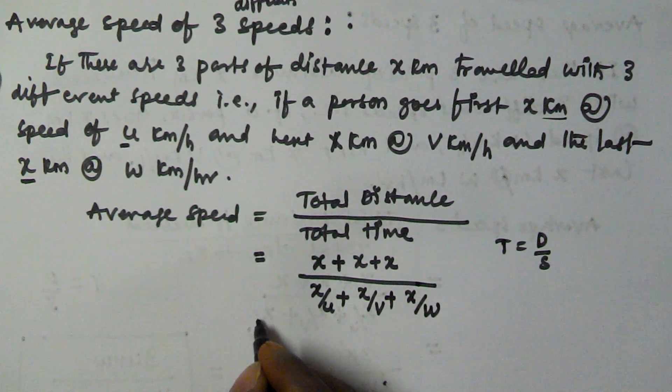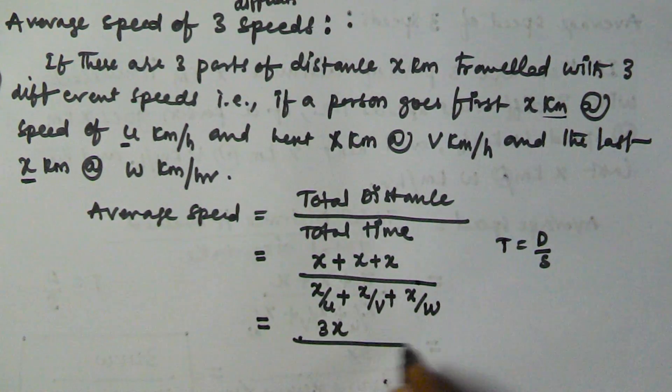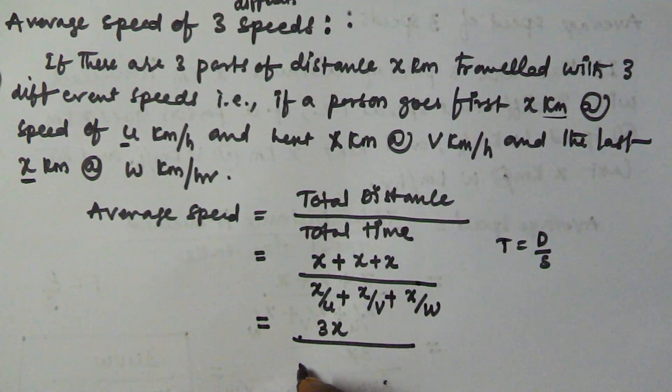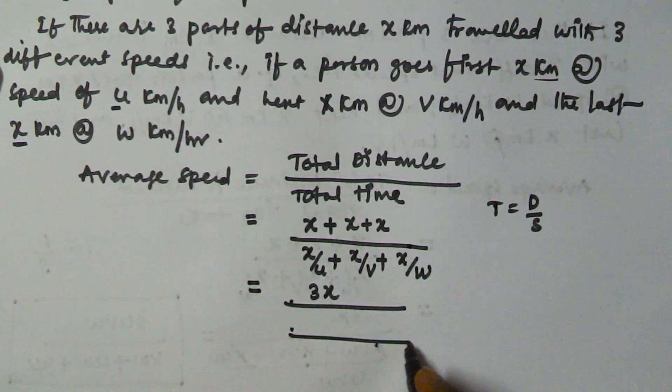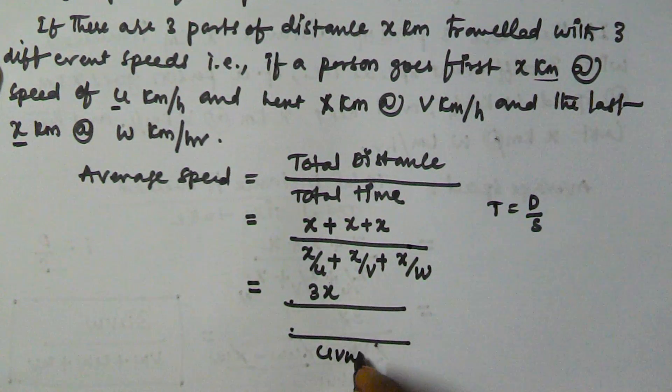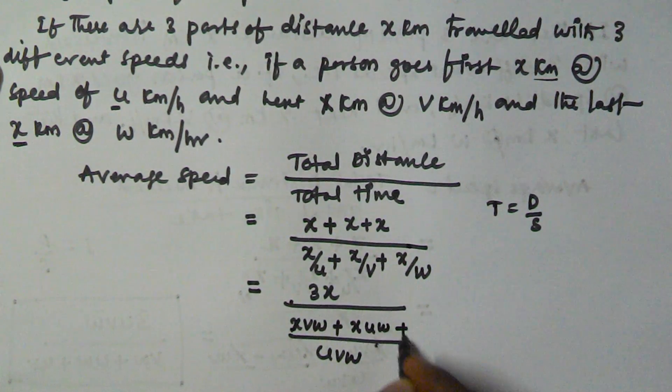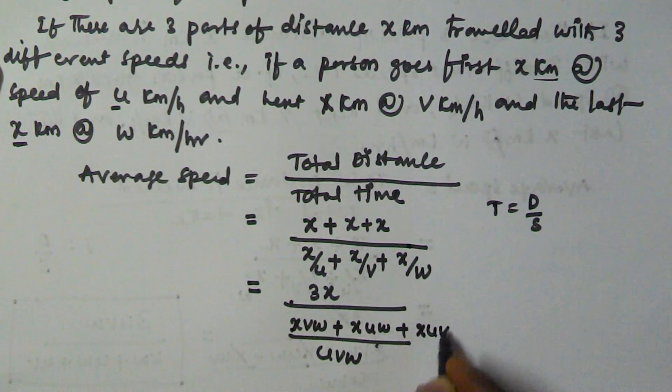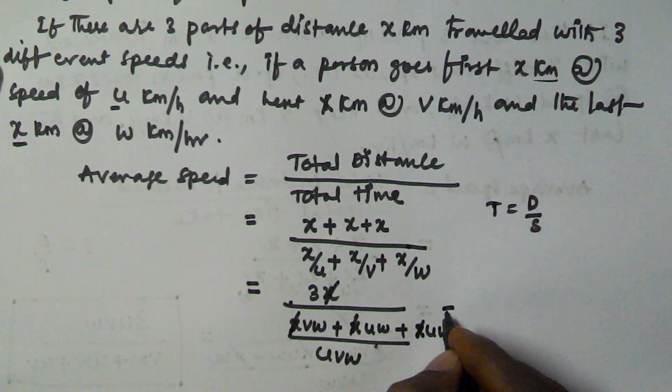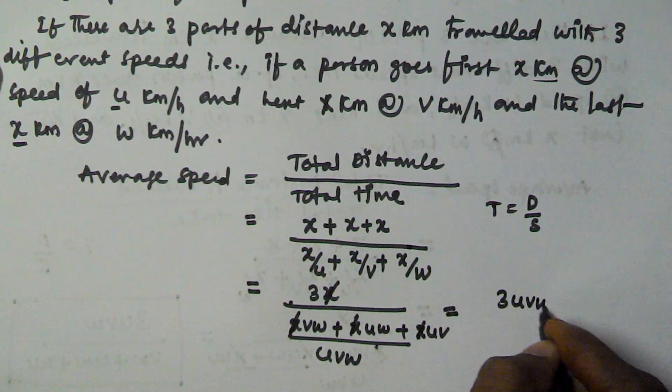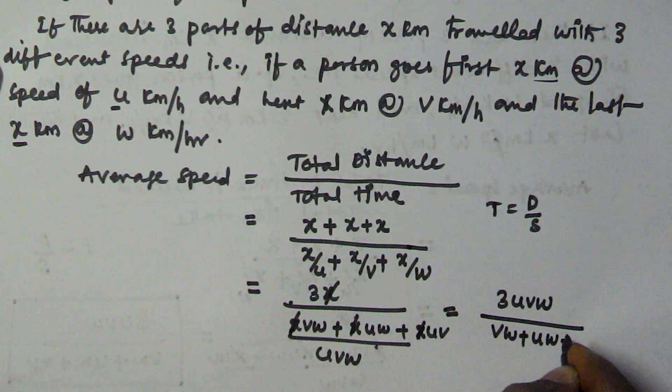So now we solve this equation. That is 3x divided by... If we take the LCM of u, v, w, we get uvw. And then xvw plus xuw plus xuv. So we can cancel x. So this equation is going to be 3uvw divided by vw plus uw plus uv.